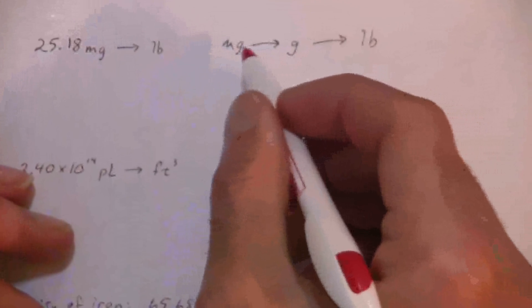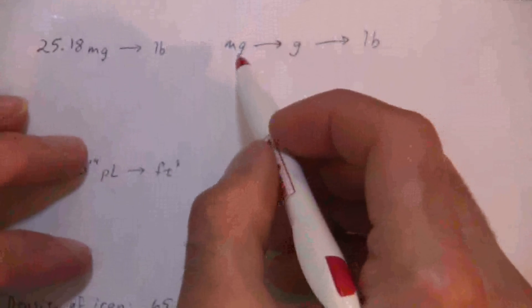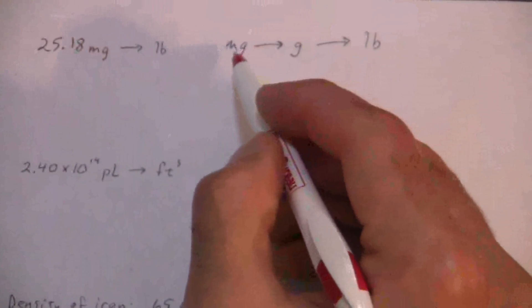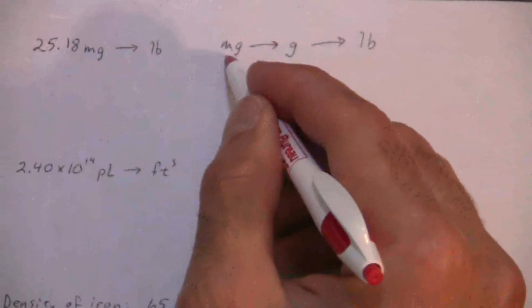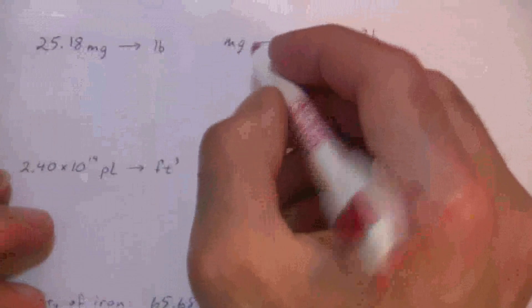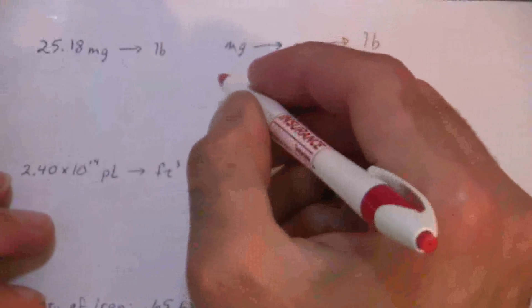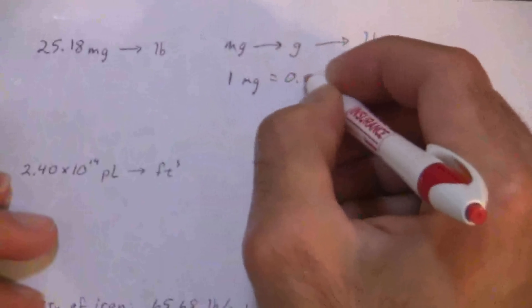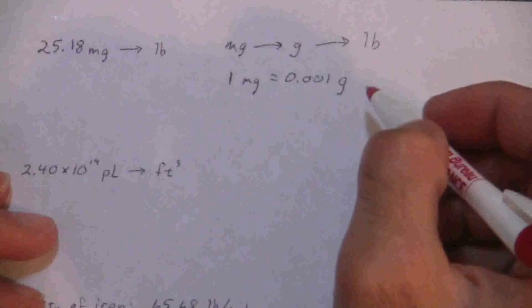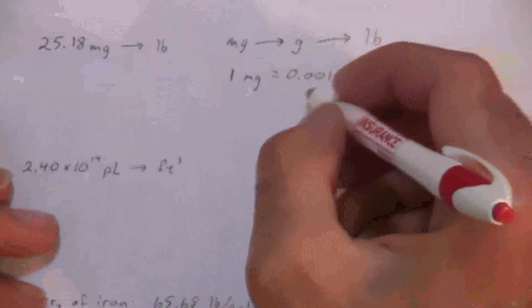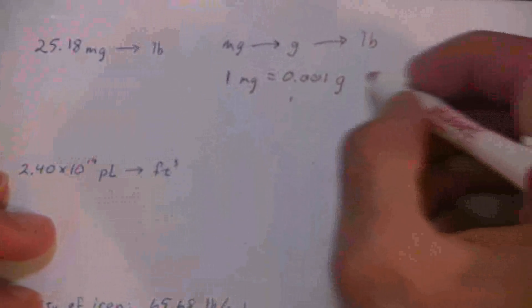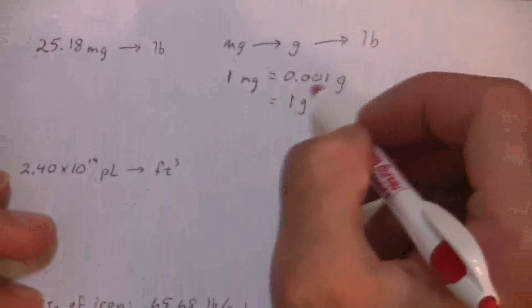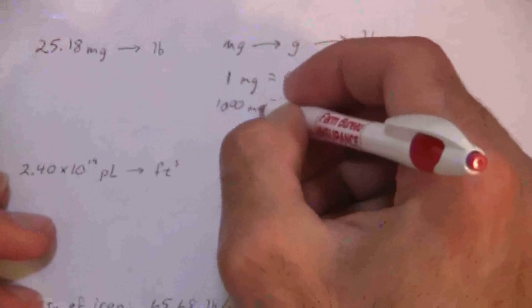But for each conversion, I need a conversion factor. So what is the conversion factor going from milligrams to grams? All right, we need to know the metric system which just uses the prefixes and the milli prefix indicates one thousandth. That means a milligram is one thousandth of a gram. Another way of saying that, well let me write that out. One milligram equals a thousandth or 0.001 grams.